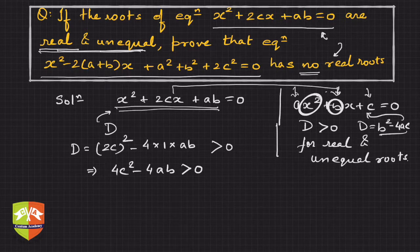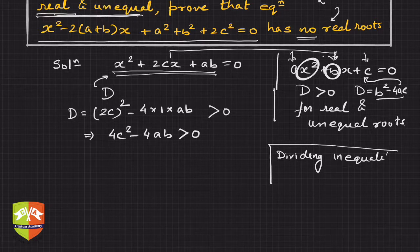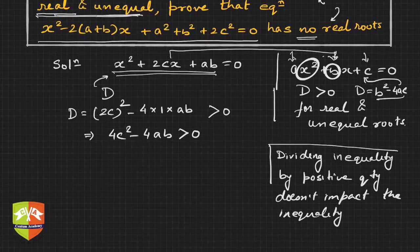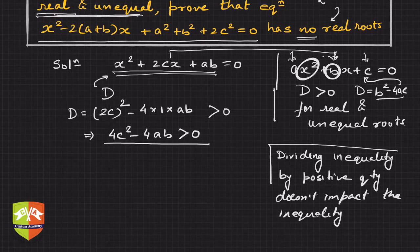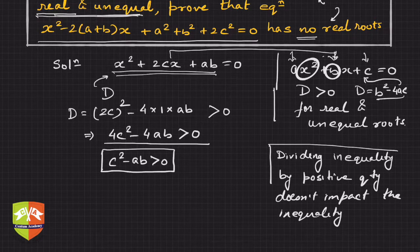When dividing an inequality by a positive constant, the inequality doesn't change. If you divide by a negative quantity, the inequality reverses. So dividing 4c² - 4ab > 0 by the positive constant 4, we can cancel 4 out and get: c² - ab > 0. This is our key result from the first equation, call it equation (1).